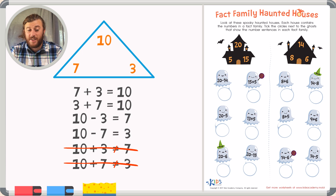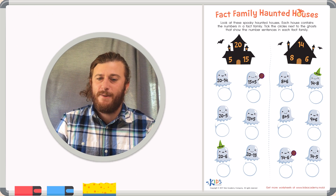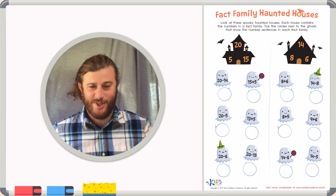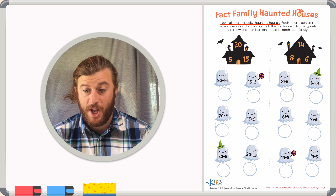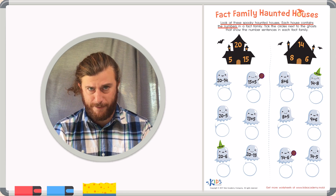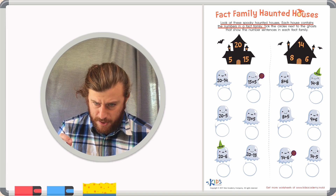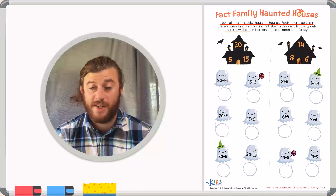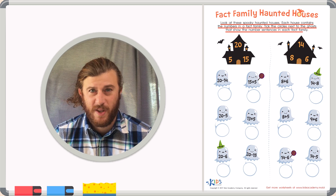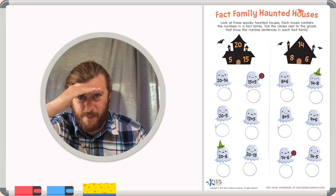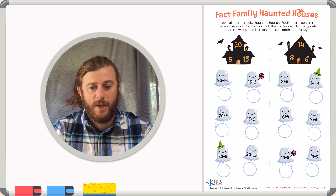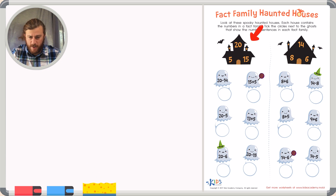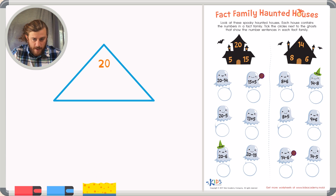Let's read the directions and get started on our worksheet. Fact Family Haunted Houses: Look at these spooky haunted houses. Each house contains the numbers in a fact family. Tick the circles next to the ghost that show the sentences in each fact family. We're going to have to look carefully to make sure that these facts belong inside the fact family. So let's take a look at our first fact family. We have 20, 5, and 15.